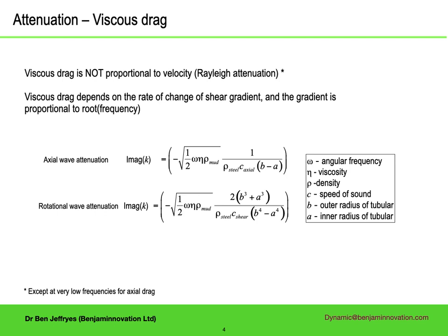The formulae for attenuation for axial and rotational waves in constant cross-section tubulars are very similar. This assumes fluid properties are the same in the annulus as inside the pipe, and that the pipe is centred in the borehole — though as frequency increases, the centering assumption makes less and less difference. So at high frequencies there is enough drag to stop resonant behavior, and only a small amount of energy will get to the surface for a long drill string.